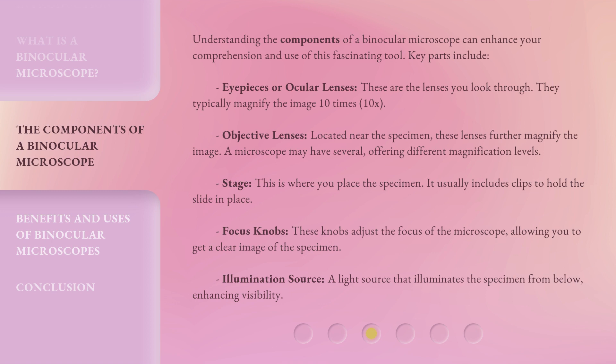Understanding the components of a binocular microscope can enhance your comprehension and use of this fascinating tool. Key parts include: eyepieces or ocular lenses — these are the lenses you look through, and they typically magnify the image 10 times (10x). Objective lenses, located near the specimen, further magnify the image; a microscope may have several, offering different magnification levels. The stage is where you place the specimen and usually includes clips to hold the slide in place. Focus knobs adjust the focus of the microscope, allowing you to get a clear image of the specimen.